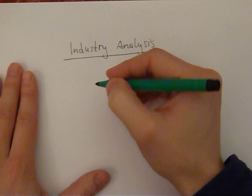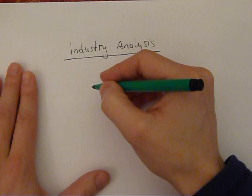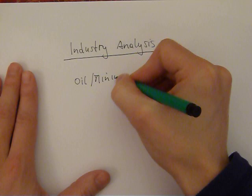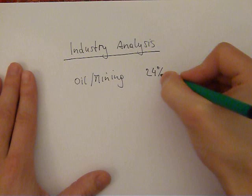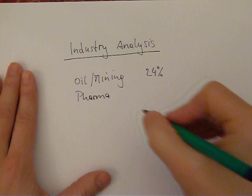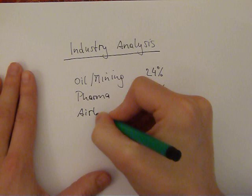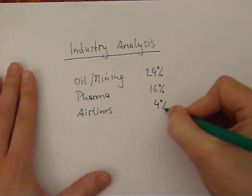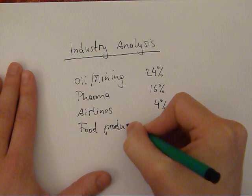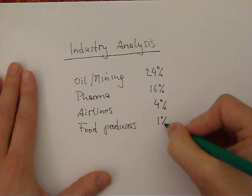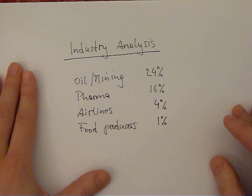If we try to compare different industries, one way to do so is by looking at the profit margins you can achieve in a particular industry. In 2008, in oil and mining the profit margin on average was 24%, in pharma it was 16%, for airlines it was a mere 4%, and for food producers the profit margin was just 1%. So clearly it makes a difference in which of these industries you're doing business.